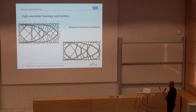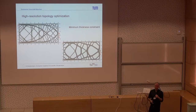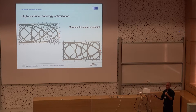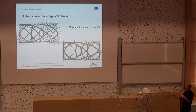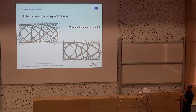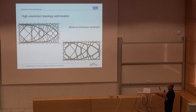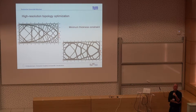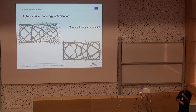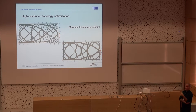Here we have included a minimum thickness constraint, which is important if you finally want to print the structure — you want to avoid structures that are too thin for the printing device. By inducing this minimum thickness constraint into the simulation, a shape automatically evolves which is not as resistant as without the constraint, but which has no internal structures below a prescribed minimum thickness. This means the optimized object can actually be printed on the available printing device.